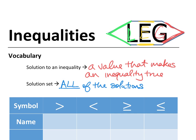Let's label these in our chart. The first symbol, looking at the leg — greater than. Second symbol — less than. Those are easy; they're right in the leg picture. The third and fourth symbols have a line underneath them. That line changes the inequality sign by adding the 'or equal to' part. So the third symbol is greater than or equal to.